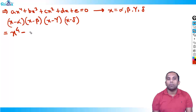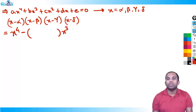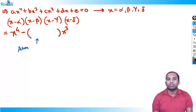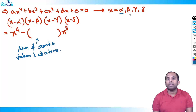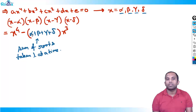After the plus sign comes a minus sign. After x⁴, x³ will come — one power decreases. The coefficient of x³ is always the sum of roots taken one at a time: α+β+γ+δ.